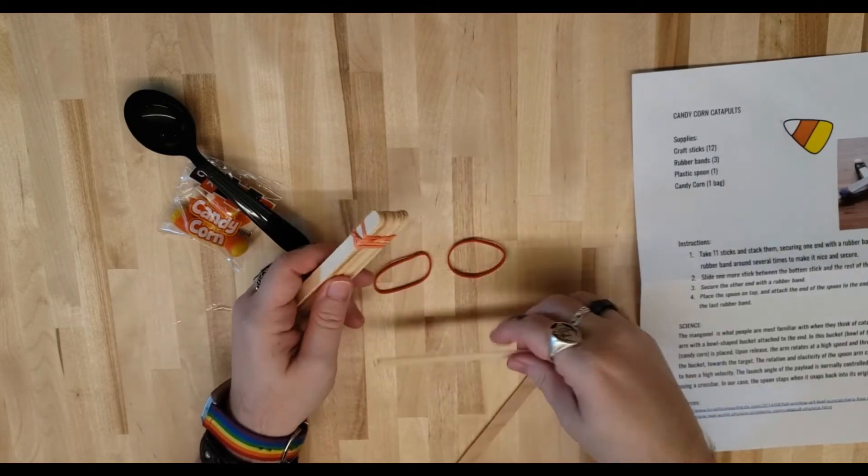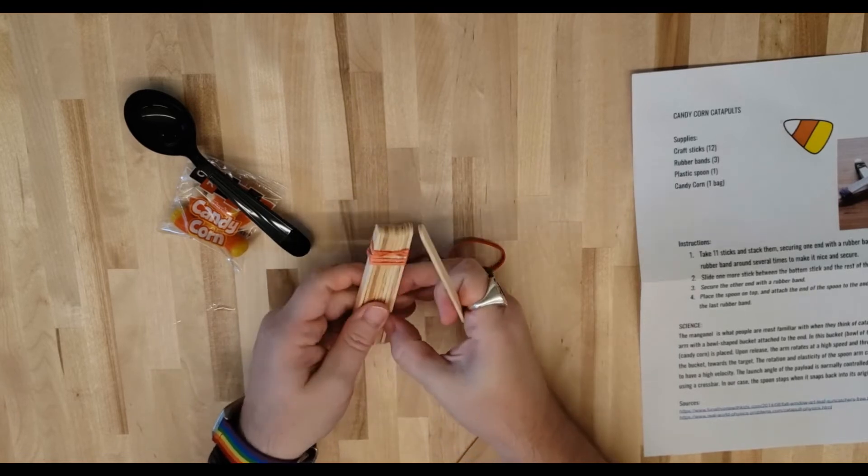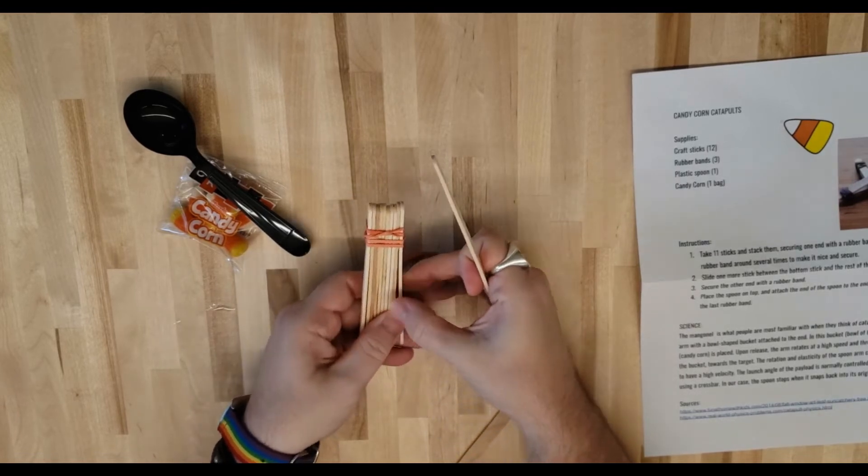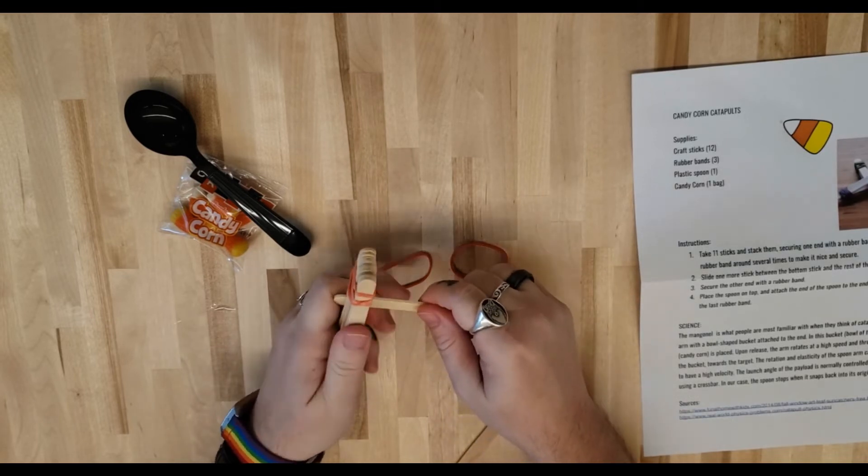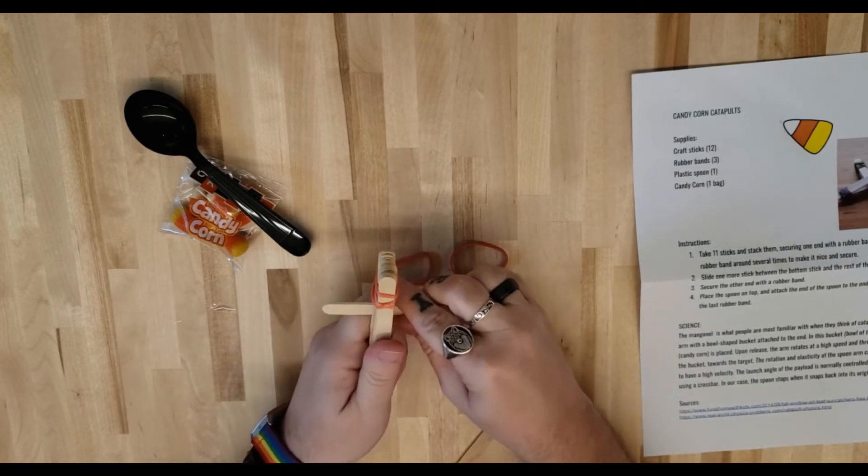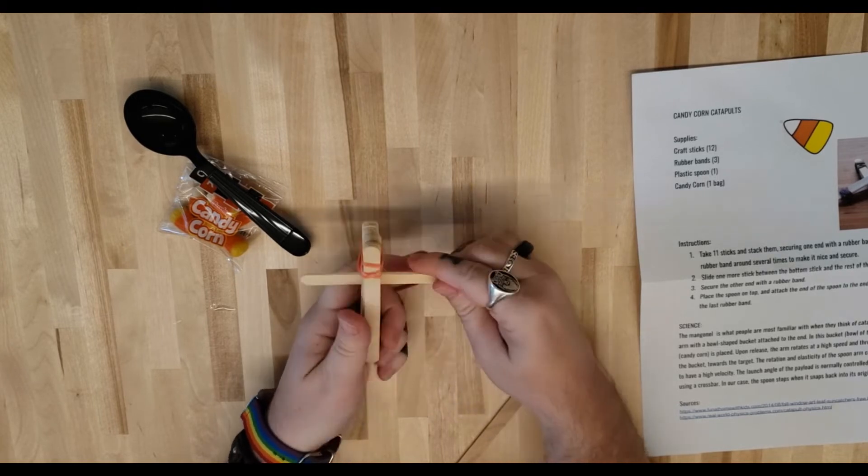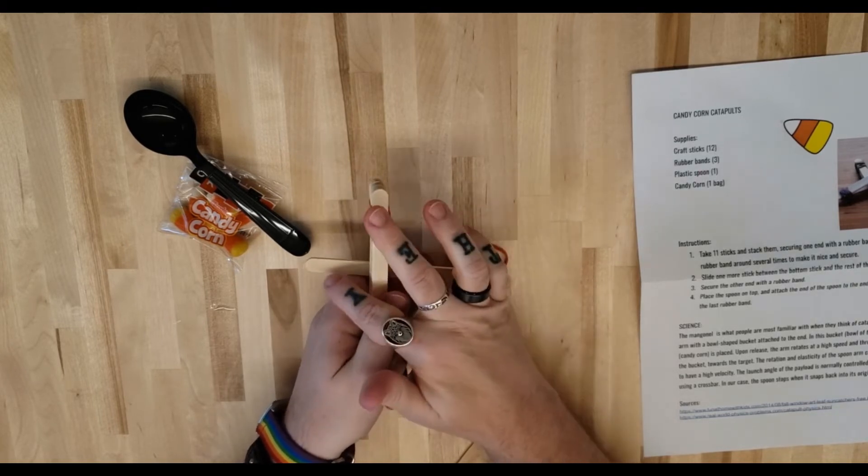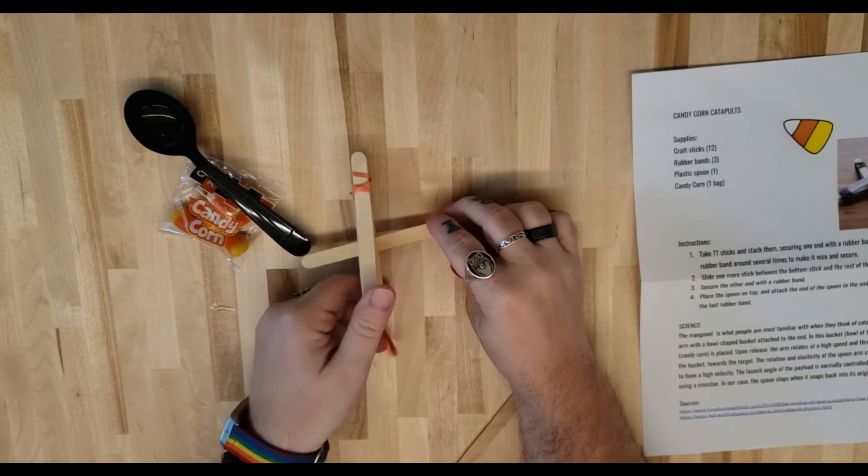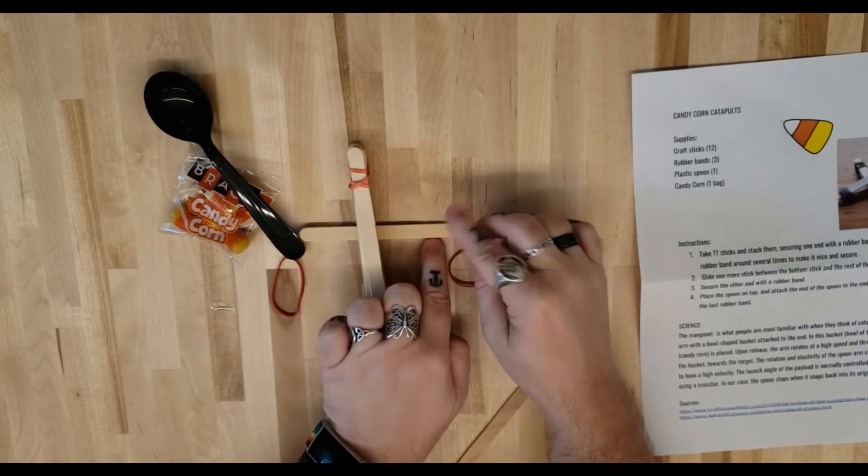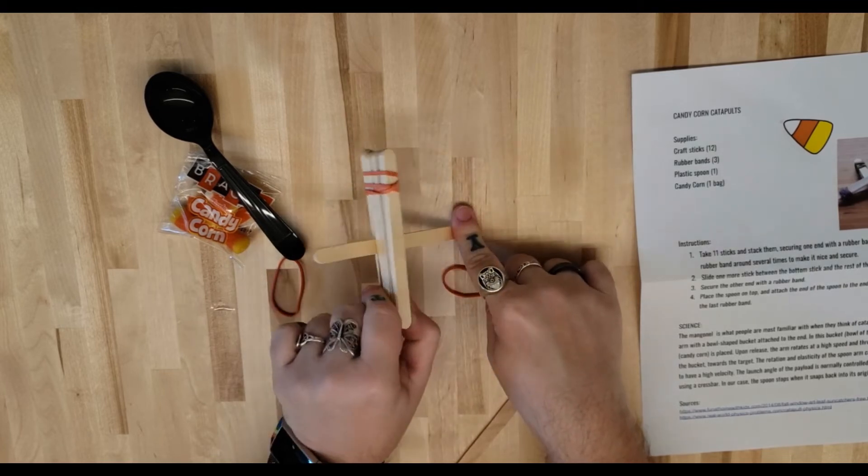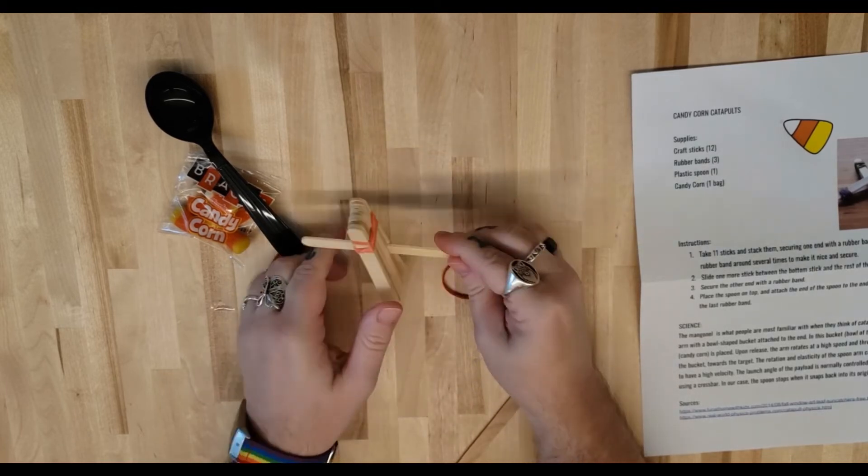All right, now we're going to take one of these and we're going to put it in between the bottom two ones of these. We're going to slide it a little bit in. This is not only going to be where our spoon attaches, but it also will give stability so that when we push down on the spoon it won't want to flip up this way because we have the stability here.